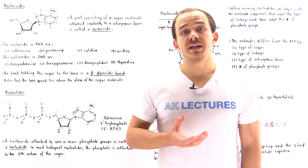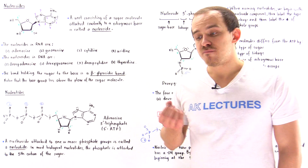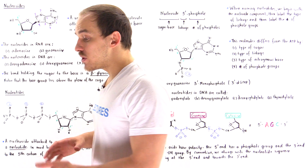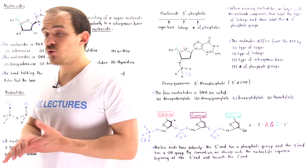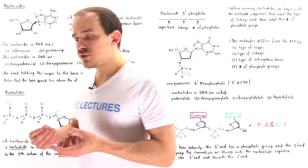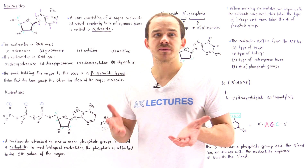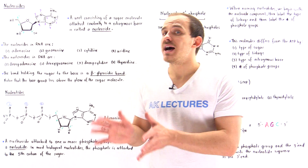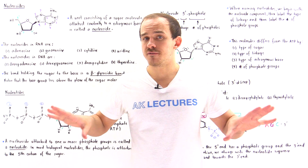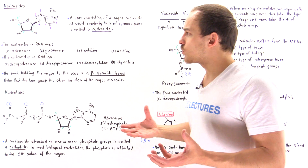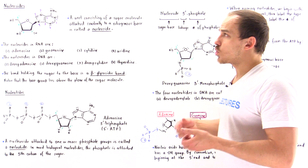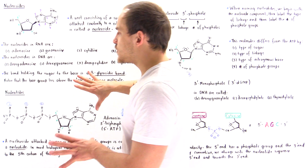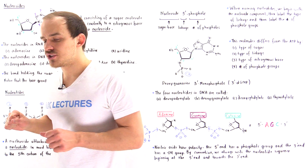A nucleic acid is a linear polymer of monomers we call nucleotides. Sometimes when describing nucleic acids, instead of using the word nucleotides, we sometimes use nucleosides. But nucleosides and nucleotides are two different things. In this lecture, we're going to discuss what the nucleoside and nucleotide is and what the difference between these two things actually is.